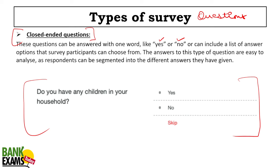You choose either yes or no, like true or false — those can be the answers. The answers are predefined and you need to choose. The respondents can choose from these predefined options.